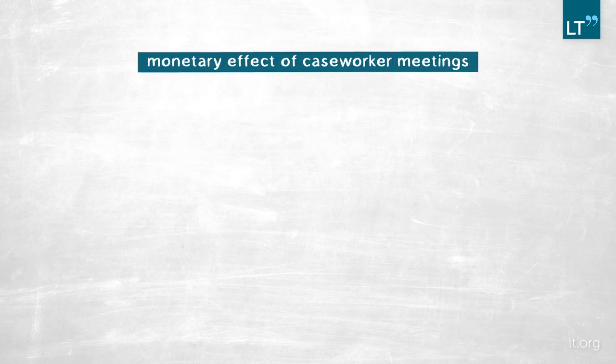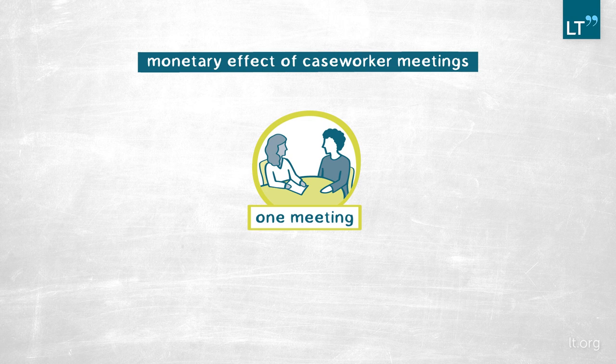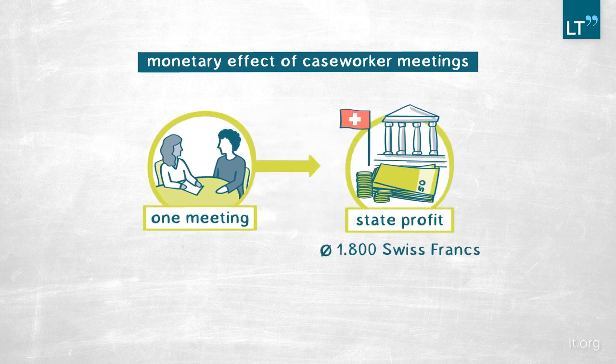We can also calculate how much the welfare state saves in benefit payments and gains in additional tax revenues when one of these meetings takes place. This calculation is back-of-the-envelope and based on some assumptions, but it gives a sense of how much these meetings matter in monetary terms. What I find is that one meeting gains roughly 1,800 Swiss francs on average — quite remarkable given that the average caseworker meeting only lasts about 40 minutes.